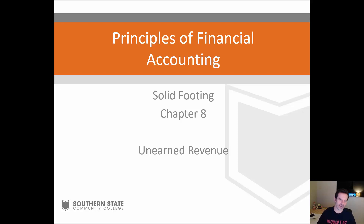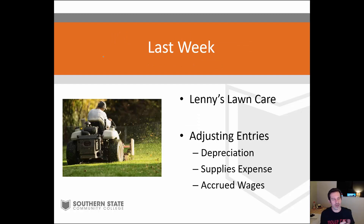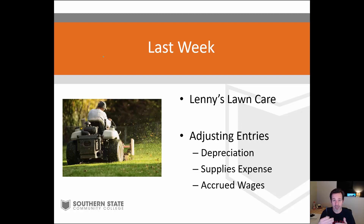Welcome back to another week of accounting. We're continuing the adjusting entries training in chapter eight of Solid Footing. Today we're going to talk about a concept called unearned revenue — it sounds complicated, but comparatively speaking it's pretty straightforward. Last week we covered adjusting entries: depreciating a long-term asset, adjusting for supplies, and making accrual entries — for example, accruing wages for employees paid the following month.